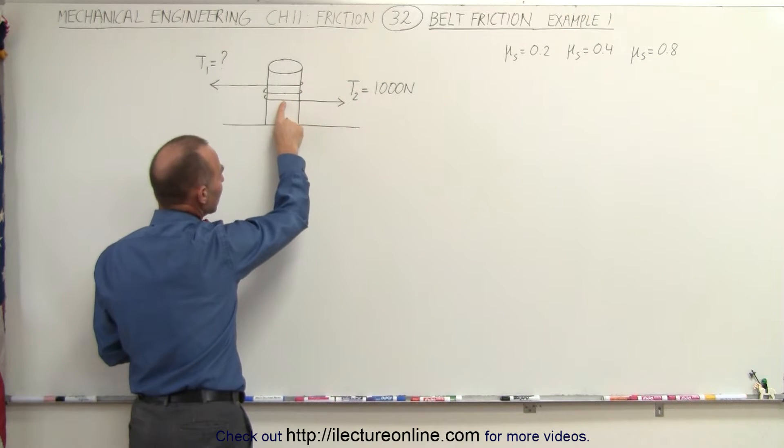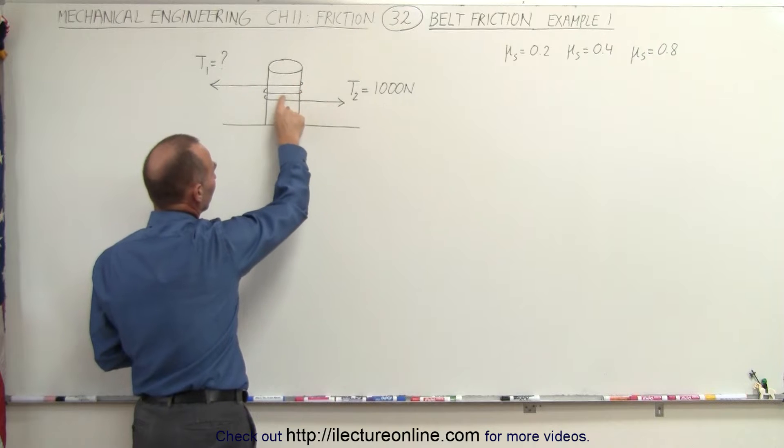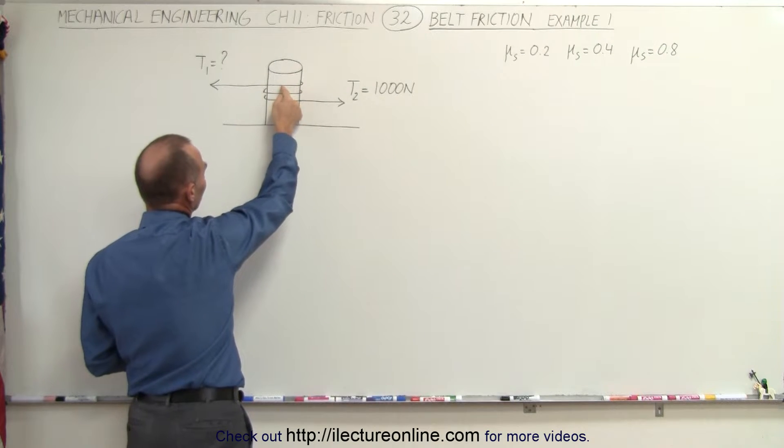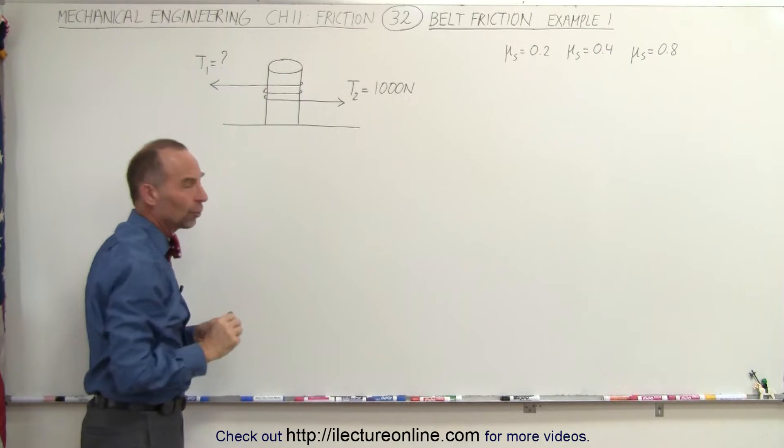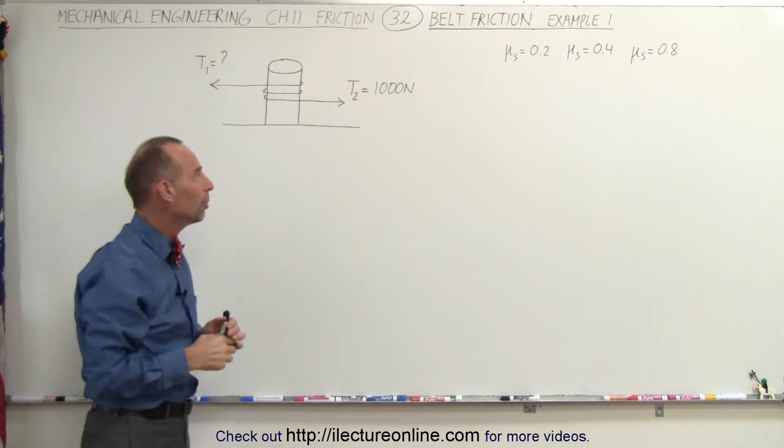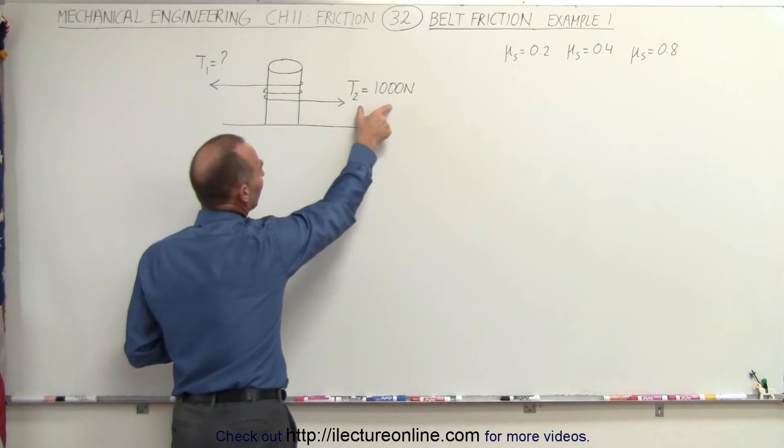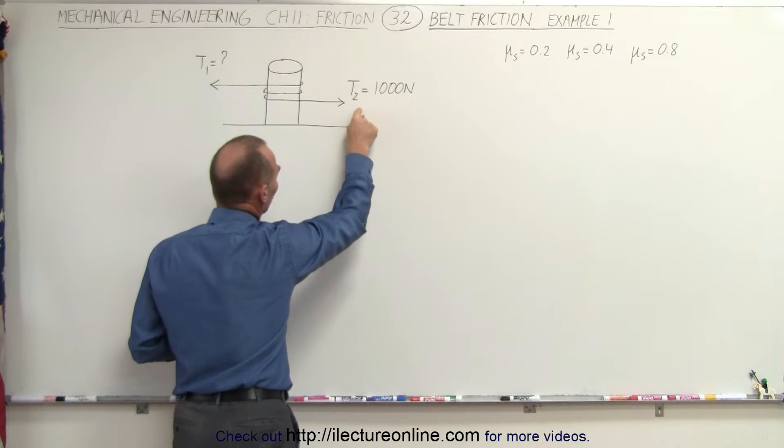The rope begins to make contact right here with the post, goes all the way around once, goes all around again a second time, and then of course after this it no longer makes contact with the post. So it's exactly twice around the post. And there's a force of 1000 Newtons pulling on this side of the rope.